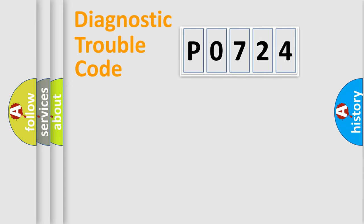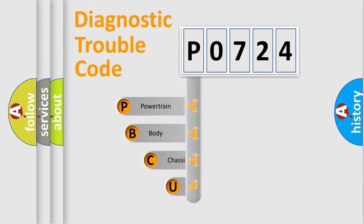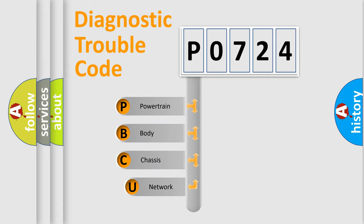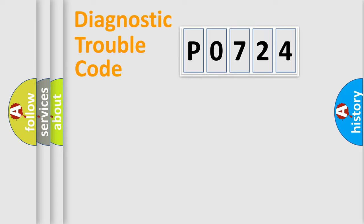First, let's look at the history of diagnostic fault code composition according to the OBD-II protocol, which is unified for all automakers since 2000. We divide the electric system of an automobile into four basic units: Powertrain, Body, Chassis, and Network.